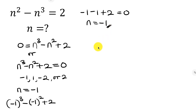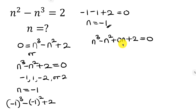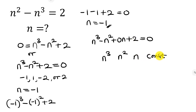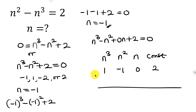To use synthetic division, rewrite the equation as n cubed minus n squared plus 0n plus 2 = 0 — we include 0n since the n term wasn't present. Write down the coefficients: 1 for n cubed, negative 1 for n squared, 0 for n, and 2 for the constant. Draw a horizontal line below, then a vertical line for the divisor, which is n = -1.